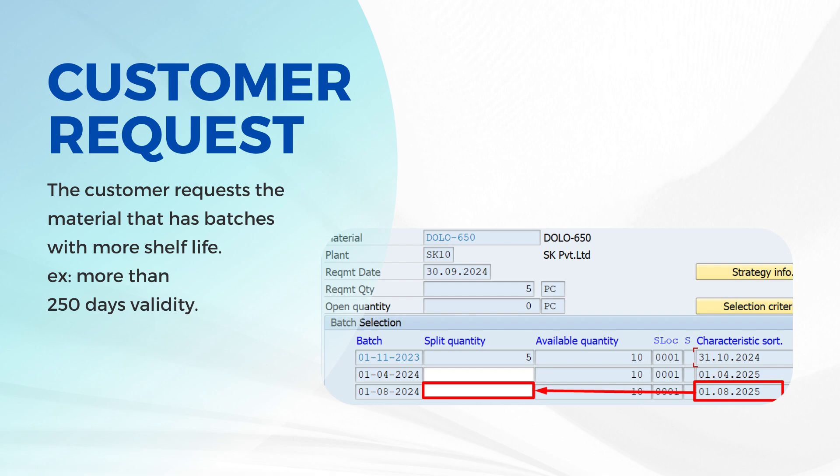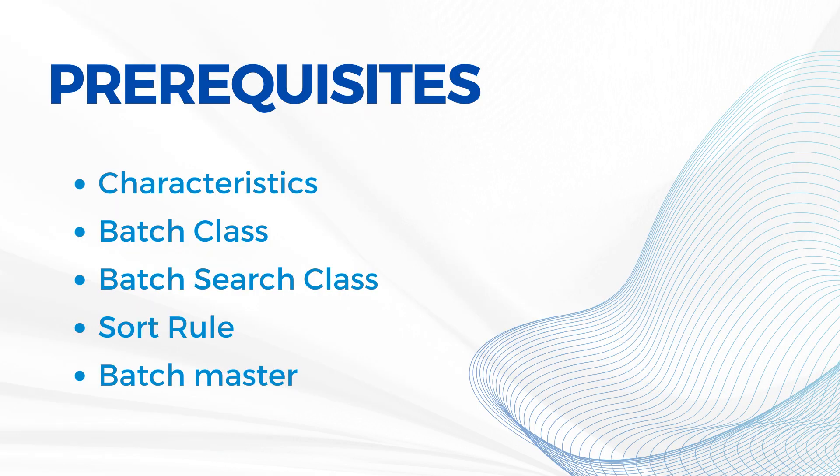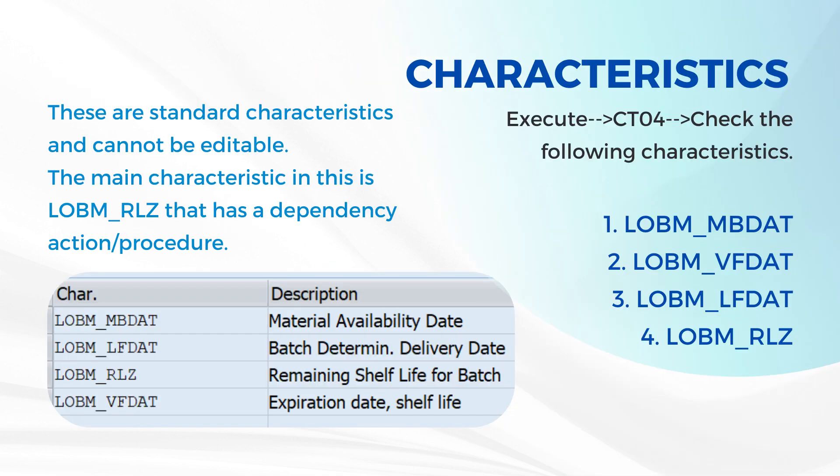In order to realize the above business requirement, below are the prerequisites that must be set up in the SAP system. We can use the standard characteristics: LOBM_MBDAT, LOBM_VFDAT, LOBM_LFDAT, and LOBM_RLZ characteristics.